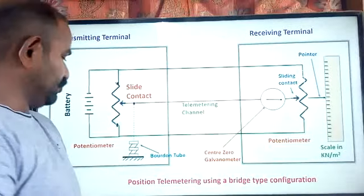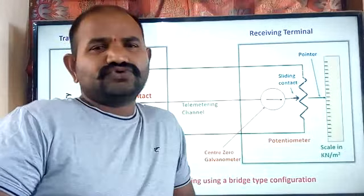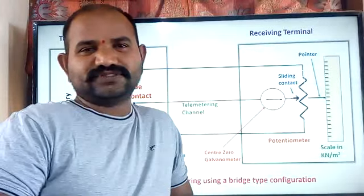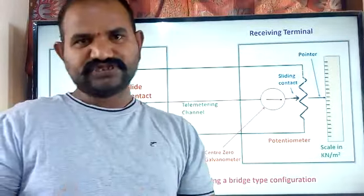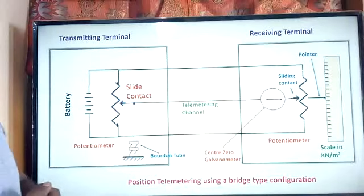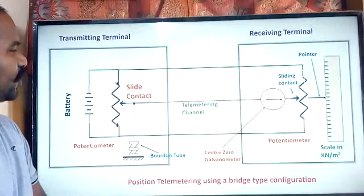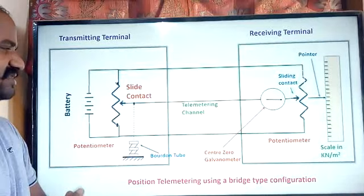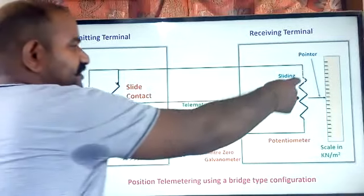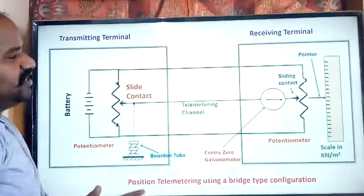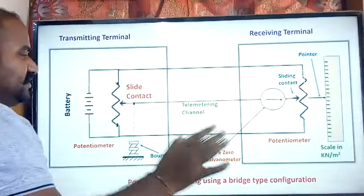The next case is the position telemetering system. There are two different ways of transmitting information using the position telemetry system. The basic position telemetry system uses contact potentiometers acting as sliding wires. Here I am using a potentiometer at both ends, and initially we assume that these two potentiometer positions — their sliding contact points — are in the same position.